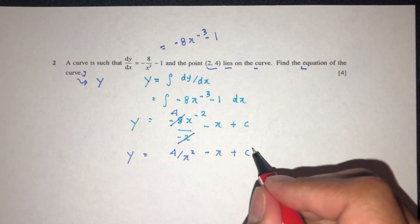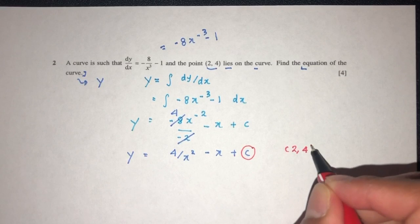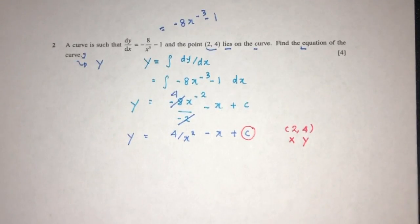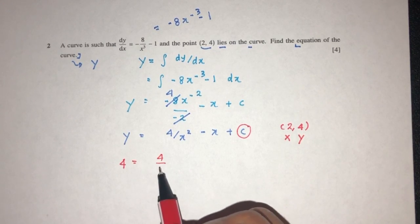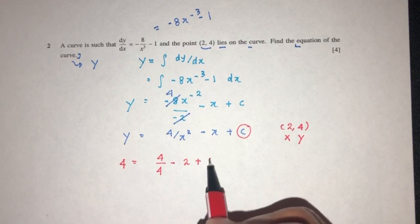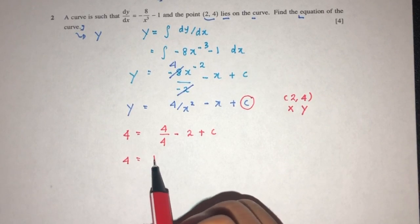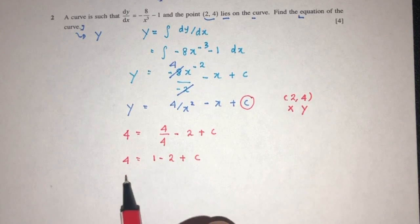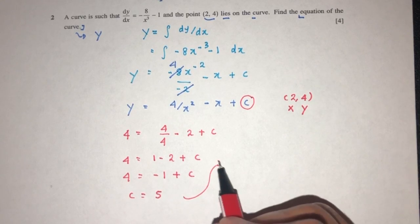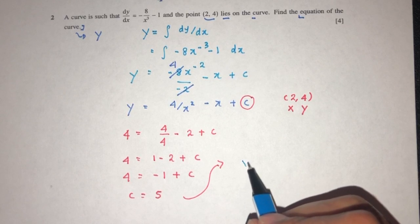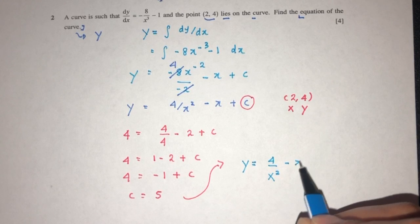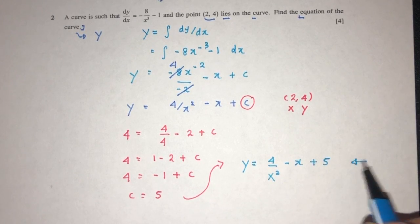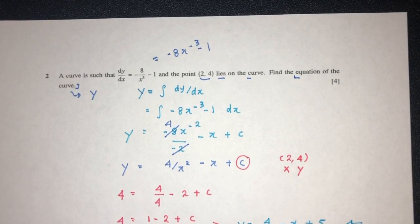That will be the integration of minus 8 x power minus 3 minus 1 with respect to dx. Minus 8 is a multiplier that doesn't change. We increase the power by 1, that should be minus 2, then divide by the same power. Then minus x plus c for the constant of integration. Simplifying, this cancels out to give 4, so you will have 4 over x squared minus x plus c. That will be y. Now we use the passing point (2, 4) to find the value of c: 4 equals 4 divided by 4 minus 2 plus c, so 4 equals 1 minus 2 plus c, giving c equals 5. Finally, y equals 4 over x squared minus x plus 5.